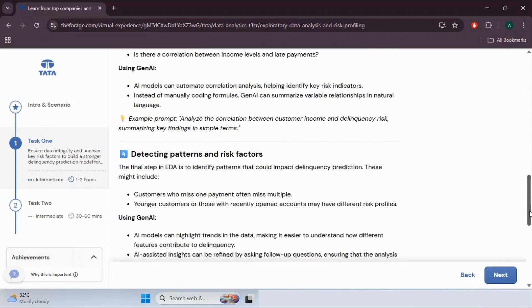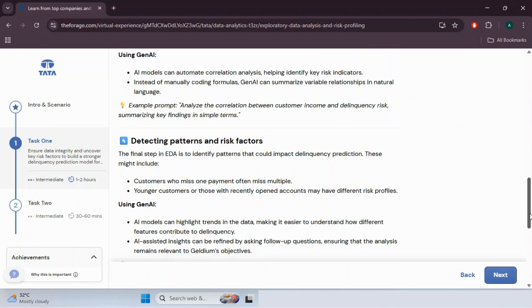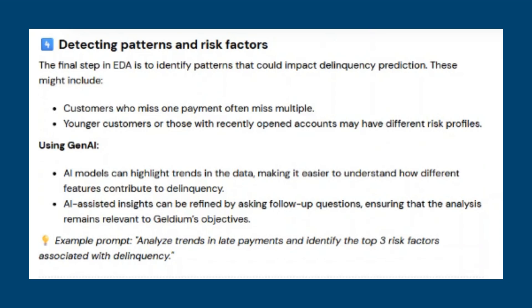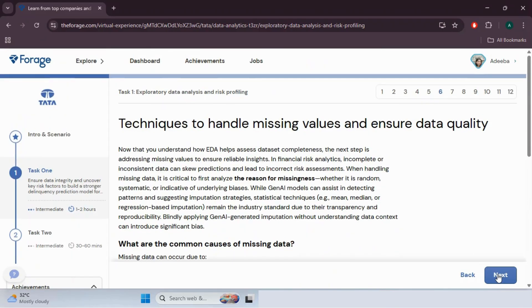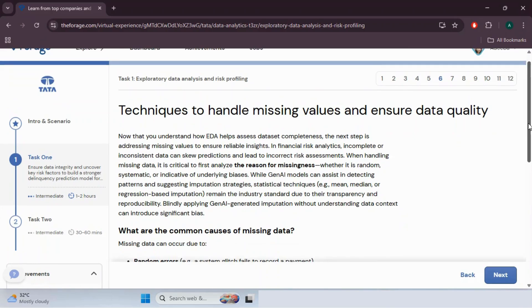Step four is detecting patterns and risk factors. The final step in EDA is to identify patterns that could impact delinquency predictions. This might include observations like: customers who missed one payment often miss multiple, or younger customers or those with recently opened accounts may have different risk profiles. AI models can highlight trends in the data, making it easier to understand how different features contribute to delinquency. AI-assisted insights can be refined with follow-up questions. For example, the prompt would be: 'Analyze trends in late payments and identify the top three risk factors associated with delinquency.'